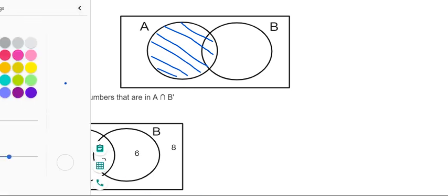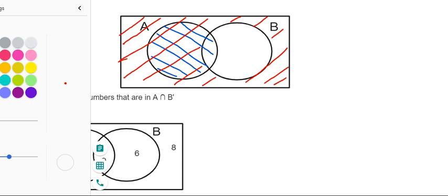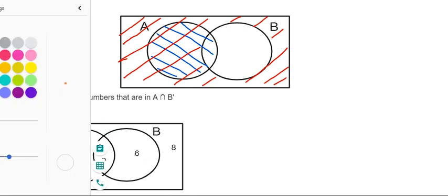And then the other part we need is not B. So if you shade this in a different colour, not B is the bit outside the B circle, also called the complement. And since we have the intersection symbol in between our two letters, this is where the two areas overlap.